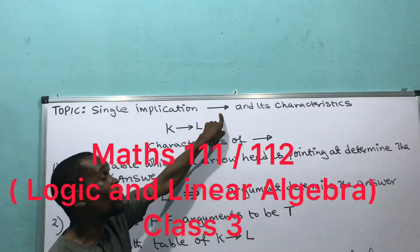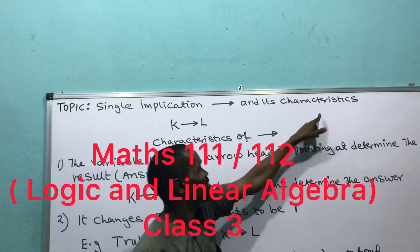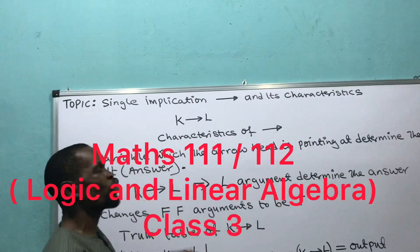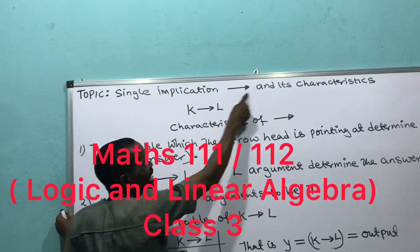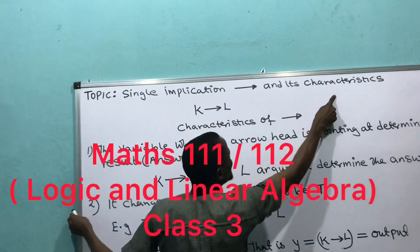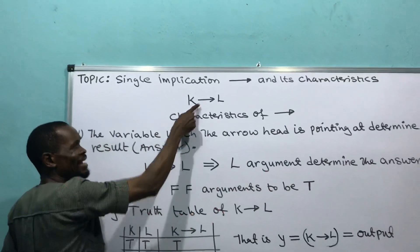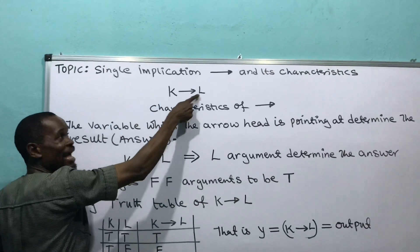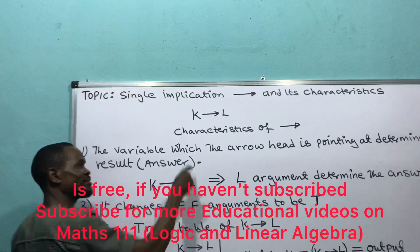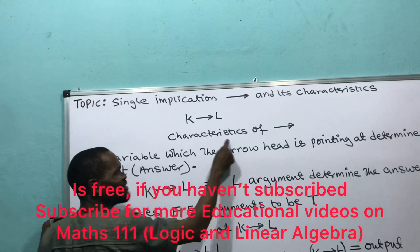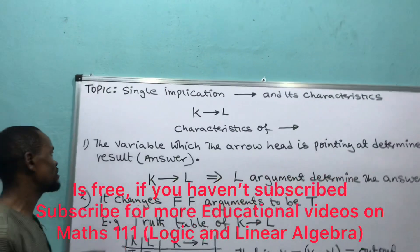We want to look at the symbol of single implication and its characteristics. This is what we want to deal with now. Single implication — let's look at K implies L. The characteristics of single implication — this is a PDP man, look at it.